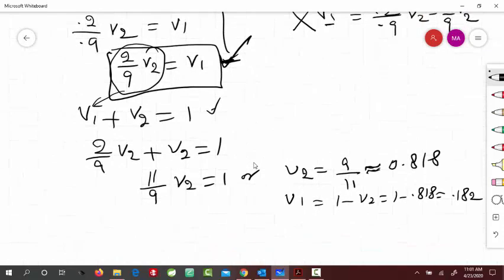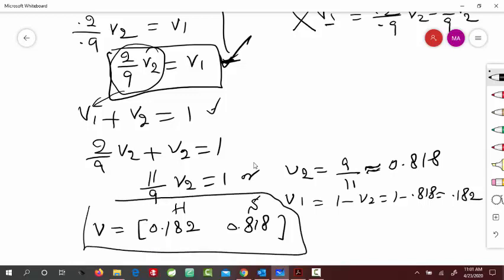So my long-term trend, V, would be equal to V1, which is 0.182, and V2 would be 0.818. And this is for science majors, and that's for humanities majors. So approximately 18.2% would be humanities majors, and 81.8% would be science majors in the long run.